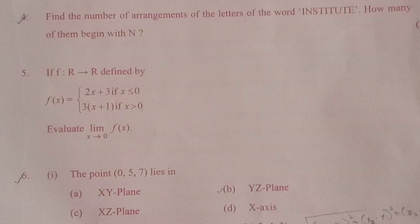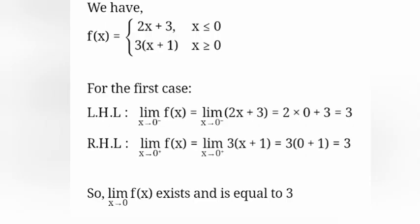Question 5. If f: R→R defined by f(x) = 2x+3 if x ≤ 0, and 3x+1 if x > 0, evaluate limit as x tends to 0 of f(x). For the left-hand limit (LHL): limit x→0⁻ f(x) = limit x→0 (2x+3) = 2(0)+3 = 3. So limit x→0 f(x) exists and is equal to 3.